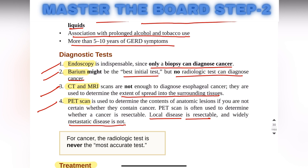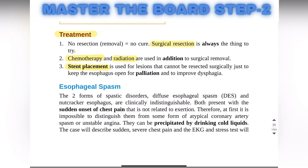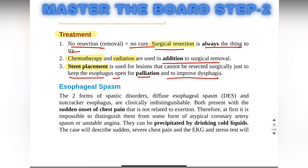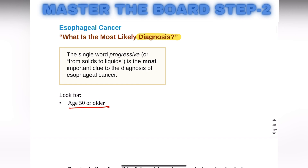For the treatment of esophageal cancer, surgical resection is always the first thing to try. If it cannot be resected, then it cannot be cured. Chemotherapy and radiation are used in addition to surgical removal. Stent placement is used for lesions that cannot be resected surgically — a stent is placed in the esophagus to improve symptoms and to improve dysphagia.